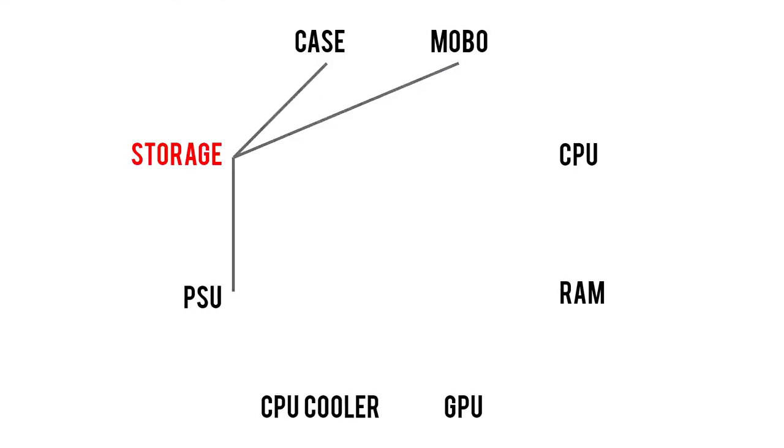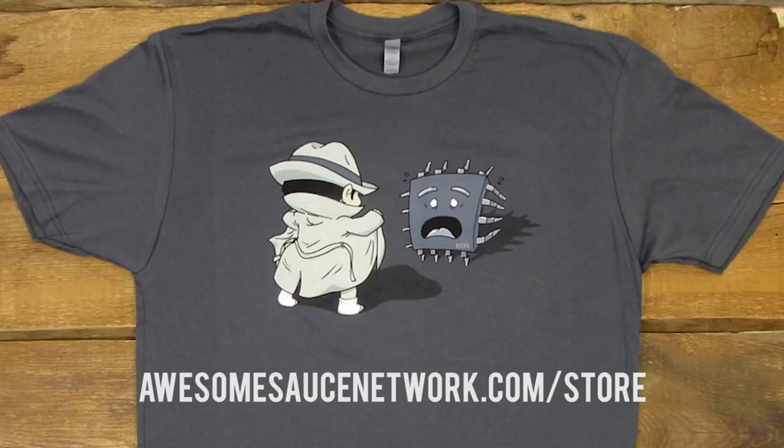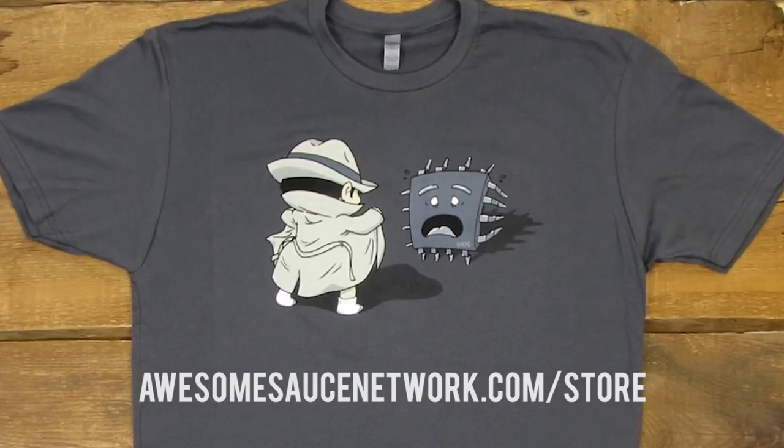That leaves us with storage, but by now we've exhausted all of its various part associations, thus concluding today's lesson on the Octagon of Compatibility. I know this was a lot of thick information to run through, and there's a fair chance I overlooked a few things myself. So if you're watching as a seasoned PC builder, please share any compatibility tips I might have missed in the comments below. Before you go, don't forget to toss me a like if you enjoyed it, and check the description for my new BIOS flasher shirt. As always, I'm Kyle with Awesome Sauce Network — thank you guys for watching, subscribe to the channel if you haven't already, and I'll see y'all in the next video.